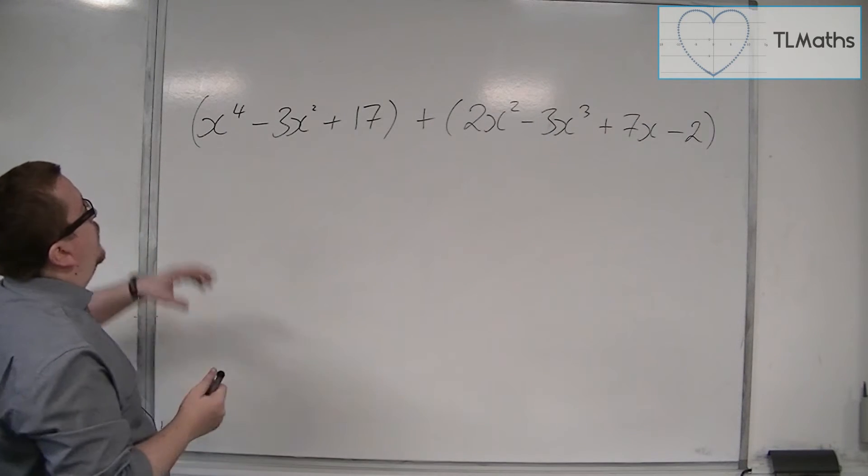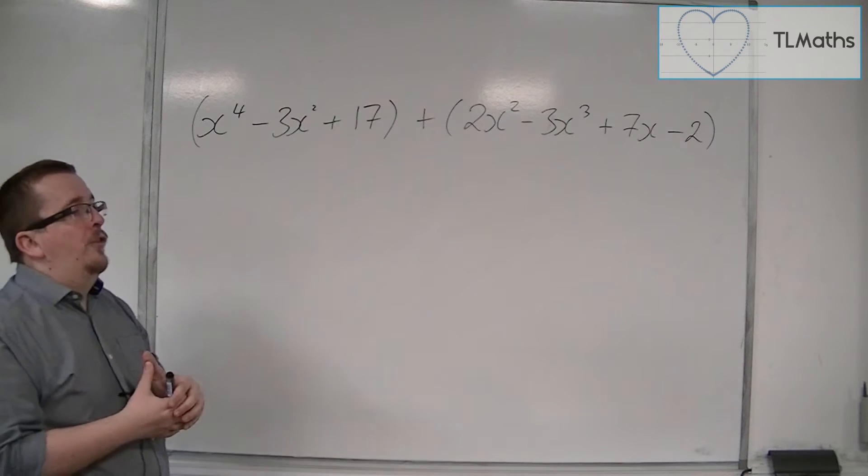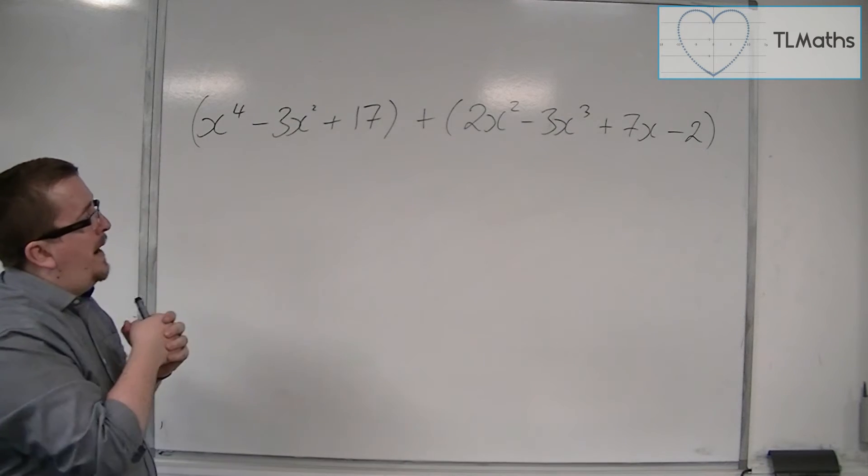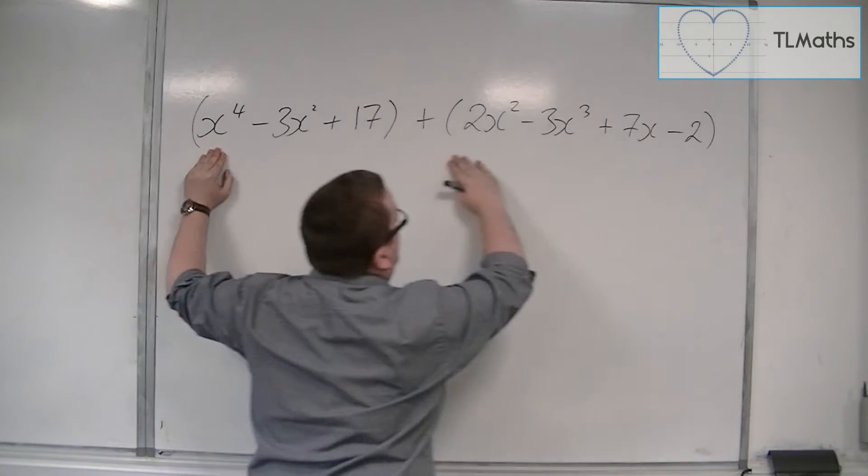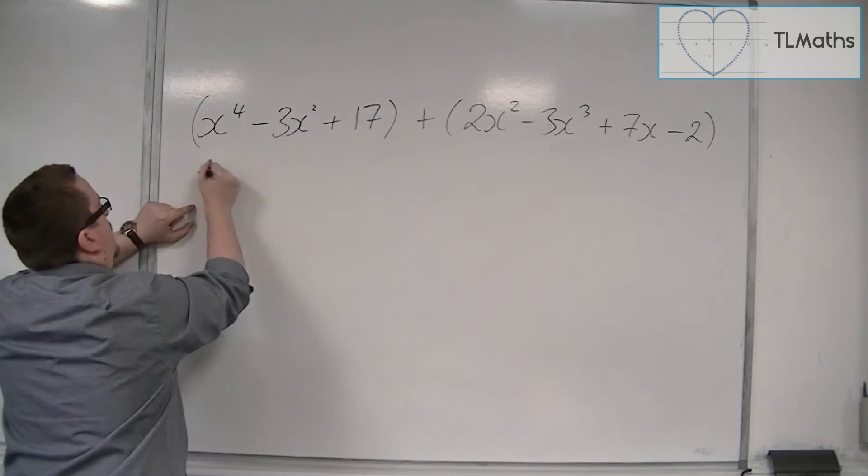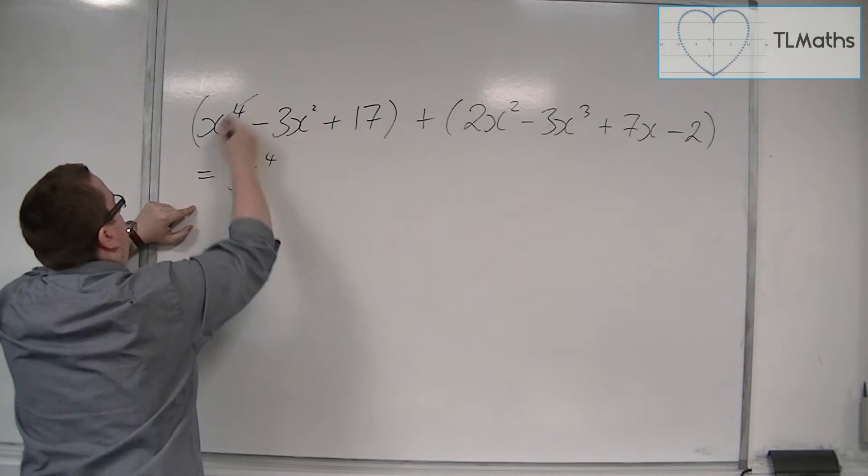Then I would want to look for the largest powers first. Let's do that. So we've got x to the 4, we've got no other x to the 4s, so we're going to have x to the 4 left over. So that deals with that one.